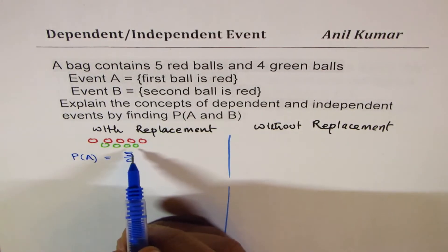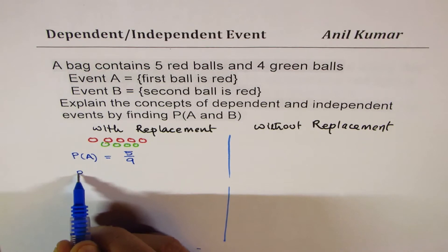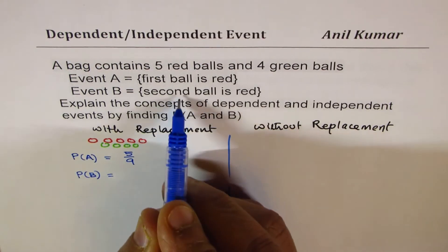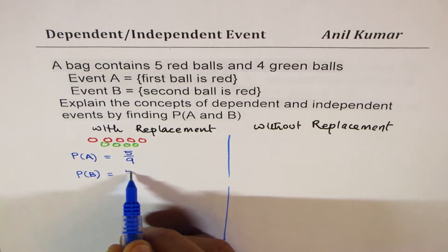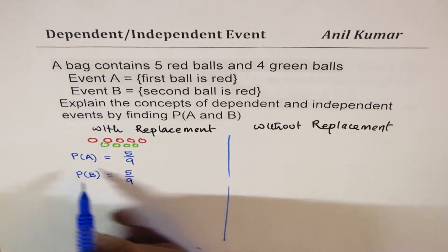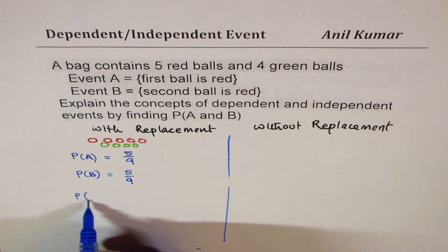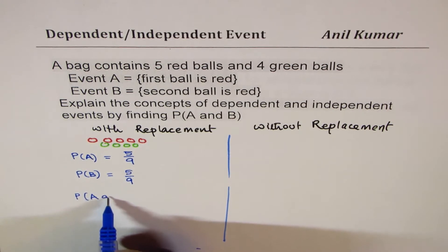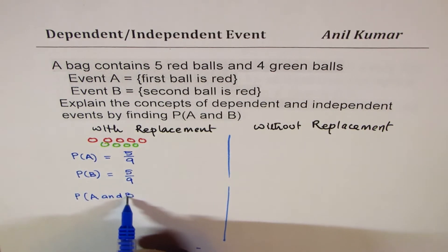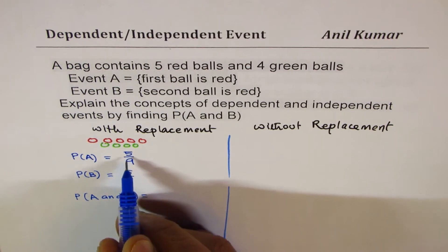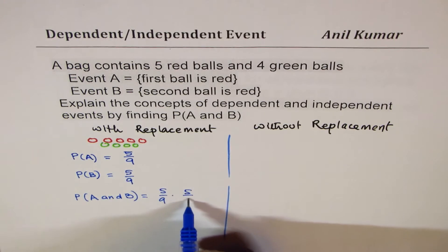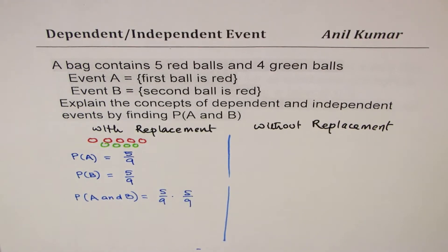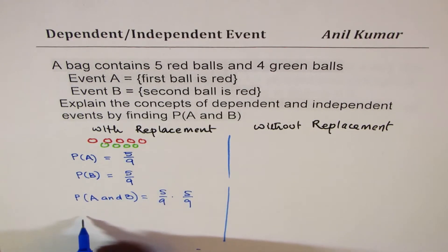If we replace the selected ball, then the probability of B — that the second ball is red — is also five out of nine. The probability of A and B is their product: five out of nine times five out of nine. So that is the case of an independent event.